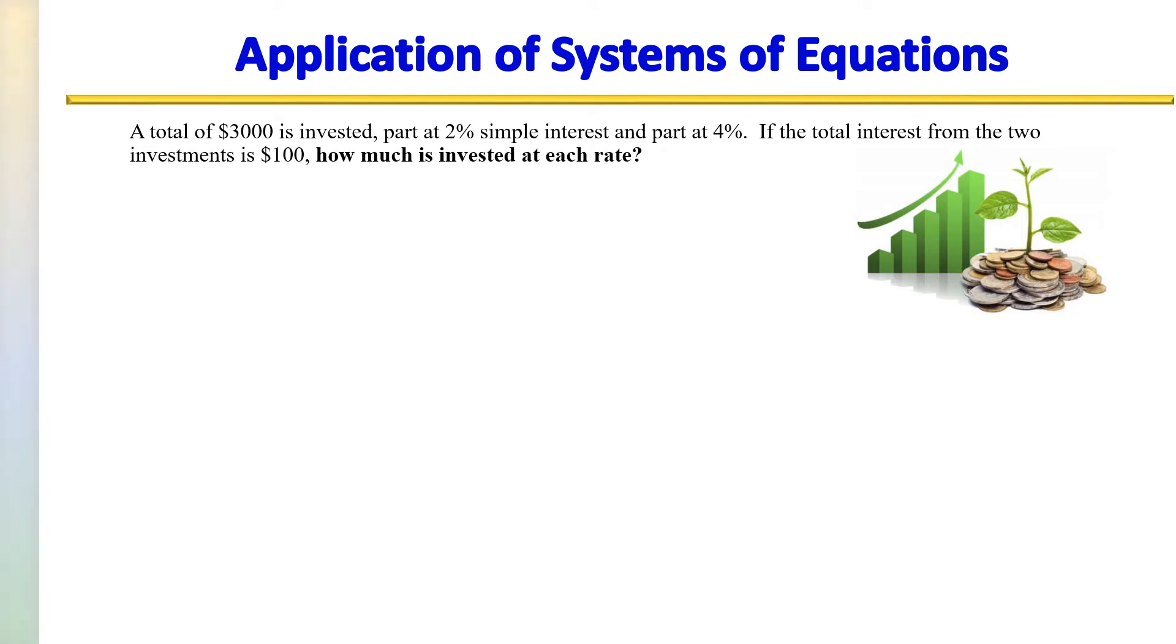Number 19. A total of $3,000 is invested part at 2% simple interest and part at 4%. If the total interest from the two investments is $100, how much is invested at each rate?